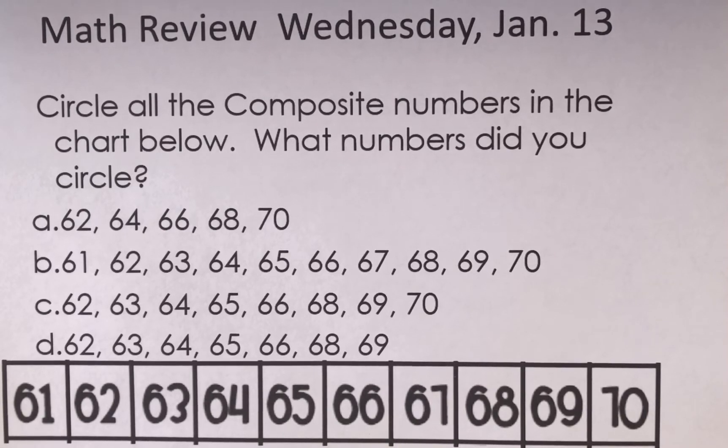One of the first ways that we can determine if a number is composite is we look for even numbers. Now, there's only one even number that is not composite. Can anybody remember what that is? It's the number two. Two is even, but it is a prime number.